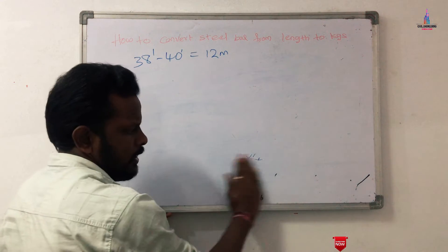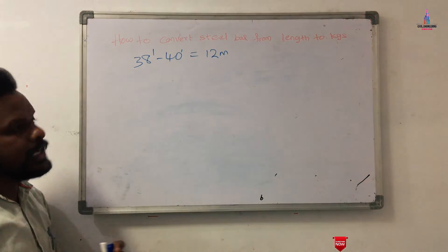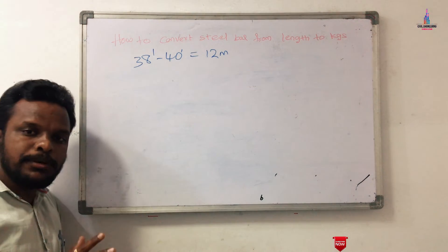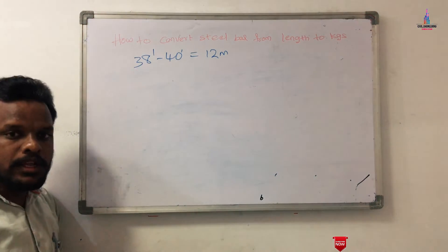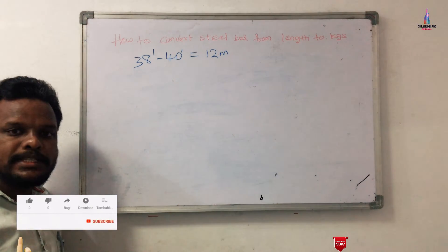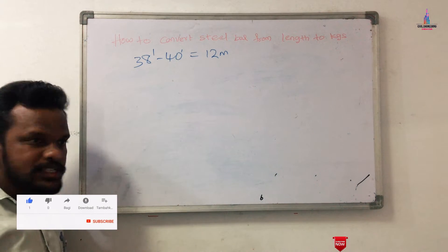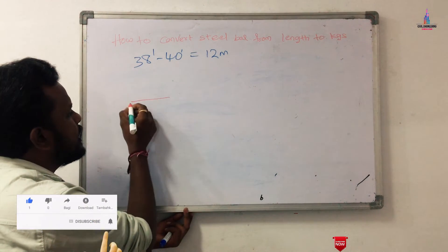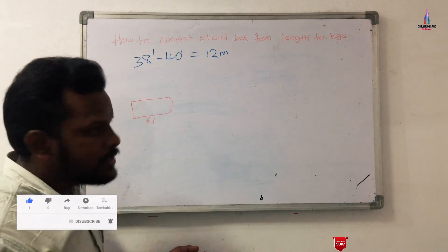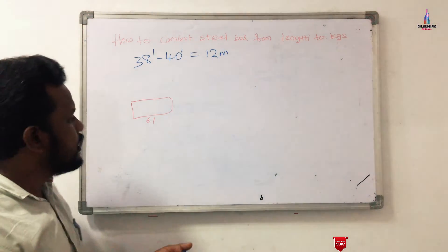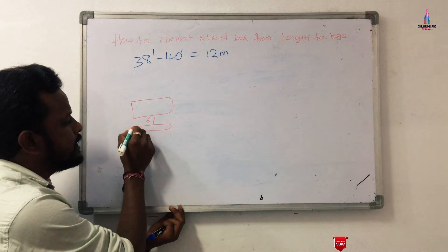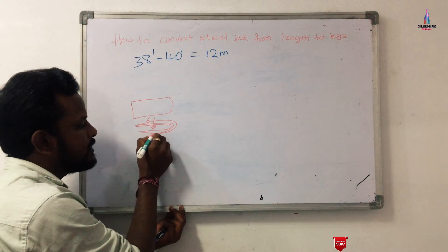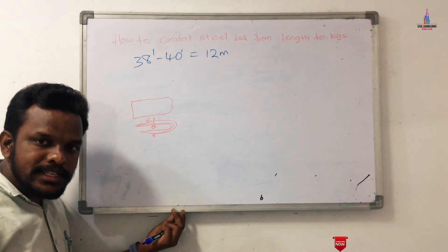One single bar length of 38 to 40 feet is approximately equal to 12 meters. This bar length was fixed based on the maximum dimensions of transport vehicles. The vehicle length is approximately 6.1 meters. If you consider this section, you can bend the bar in a shape that is approximately 6 meters plus 6 meters.